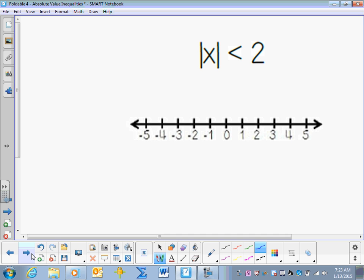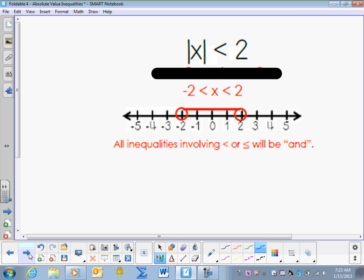Since the absolute value symbol is isolated, go ahead and remove the absolute value signs and rewrite the inequality and graph it. Your solution is negative 2 is less than x, which is less than 2.